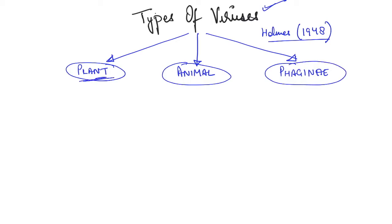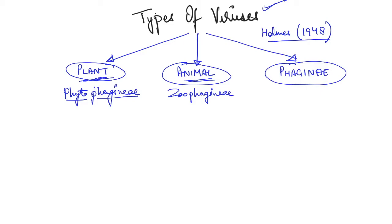The first type is plant viruses, which are also known as phytophages — phyto meaning plant and phaginae meaning virus. In the same way, animal viruses are known as zoophages — zoo meaning animal. And phaginae are viruses which occur in lower organisms.